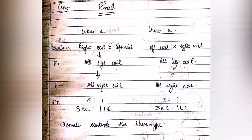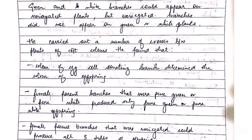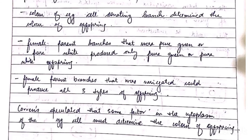The four o'clock plant, Mirabilis jalapa, is a classic example of maternal inheritance from Correns' experiment. He worked with three types: pure green, pure white, and variegated (mottled green and white). Correns carried out crosses between plants of different colors and found that the color of the egg cell-donating branch determined the color of the offspring.